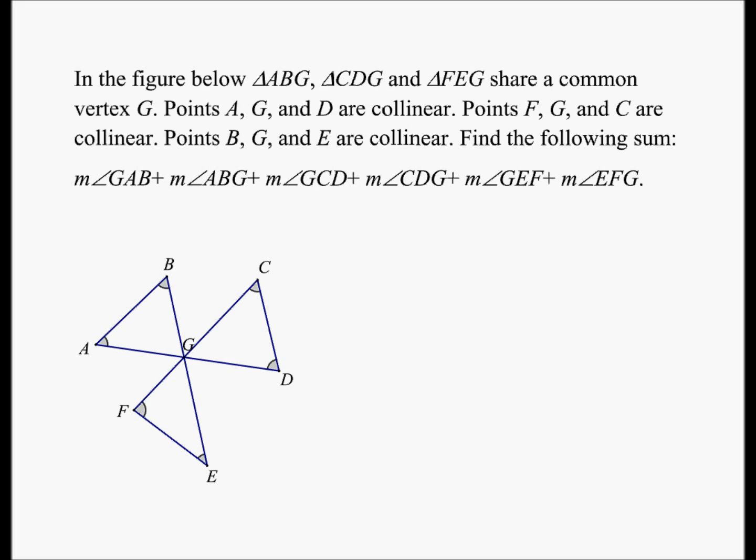In the figure below, triangle ABG, triangle CDG, and triangle FEG share a common vertex G. Points A, G, and D are collinear. Points F, G, and C are collinear. Points B, G, and E are collinear.